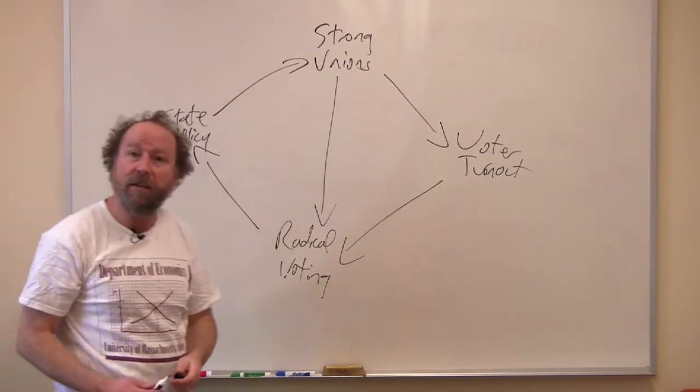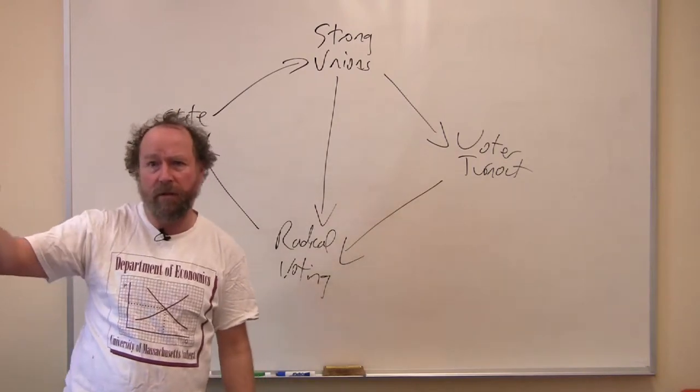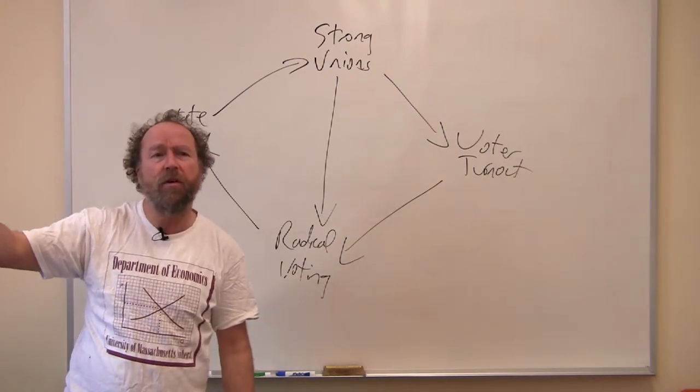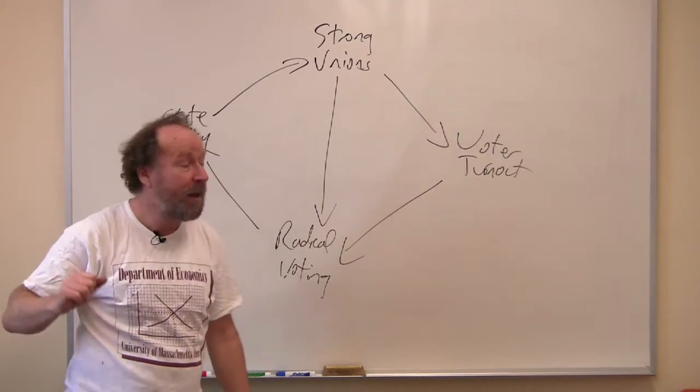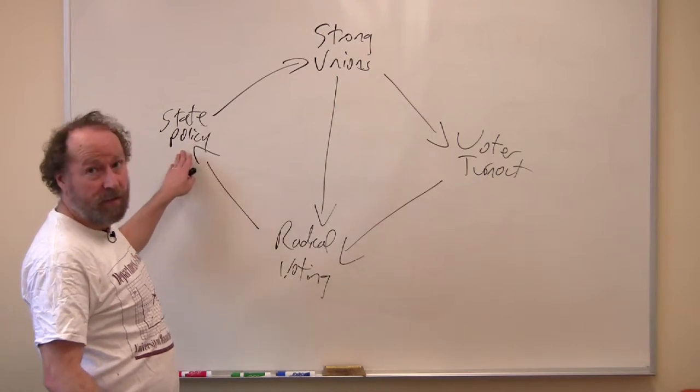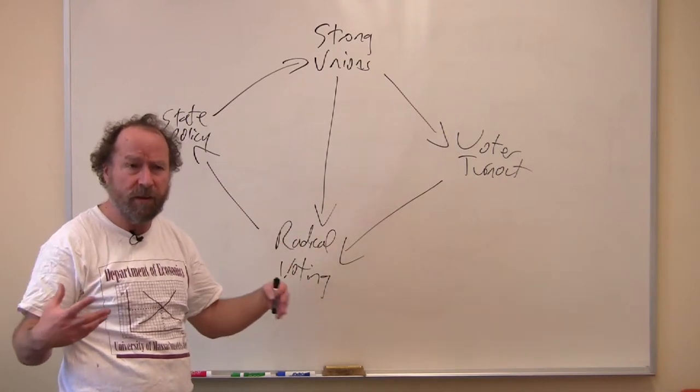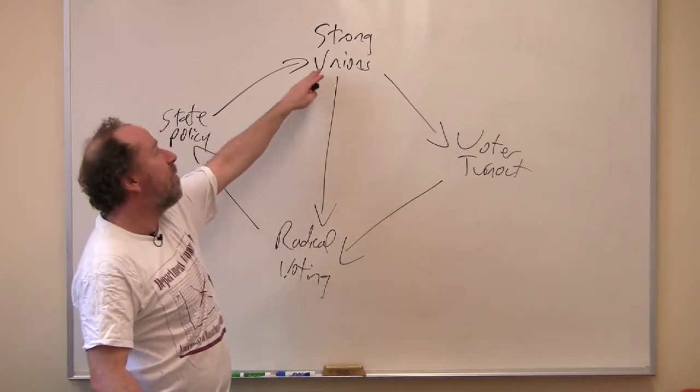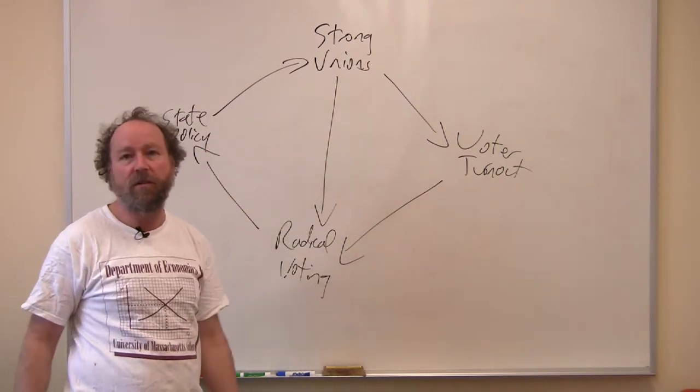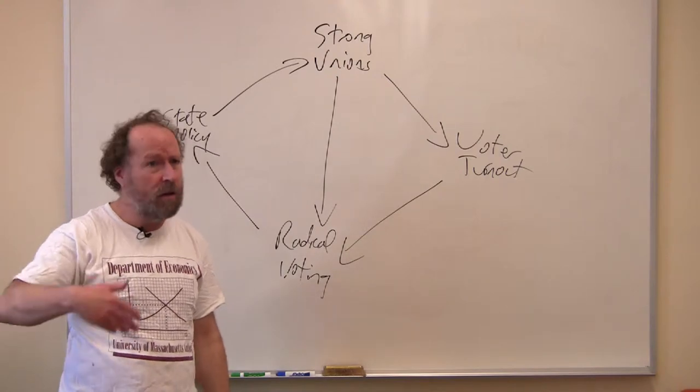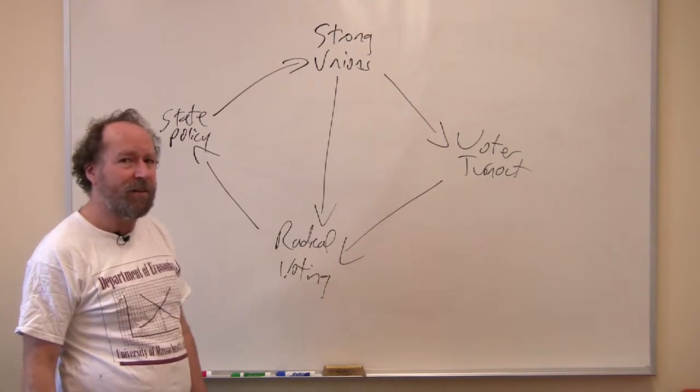Radical voting leads to state policy. I show for Massachusetts, and I've shown it for Illinois and New York, you can show it by comparison with the places that don't have strong unions and don't have radical voting. State policy is more favorable to labor and the whole agenda of the age of reform in the progressive era. And that more friendly state policy strengthens unions. This is the virtuous cycle. Virtuous if you like unions, and you like workplace regulation and higher wages. Notice it goes in the other direction as well.